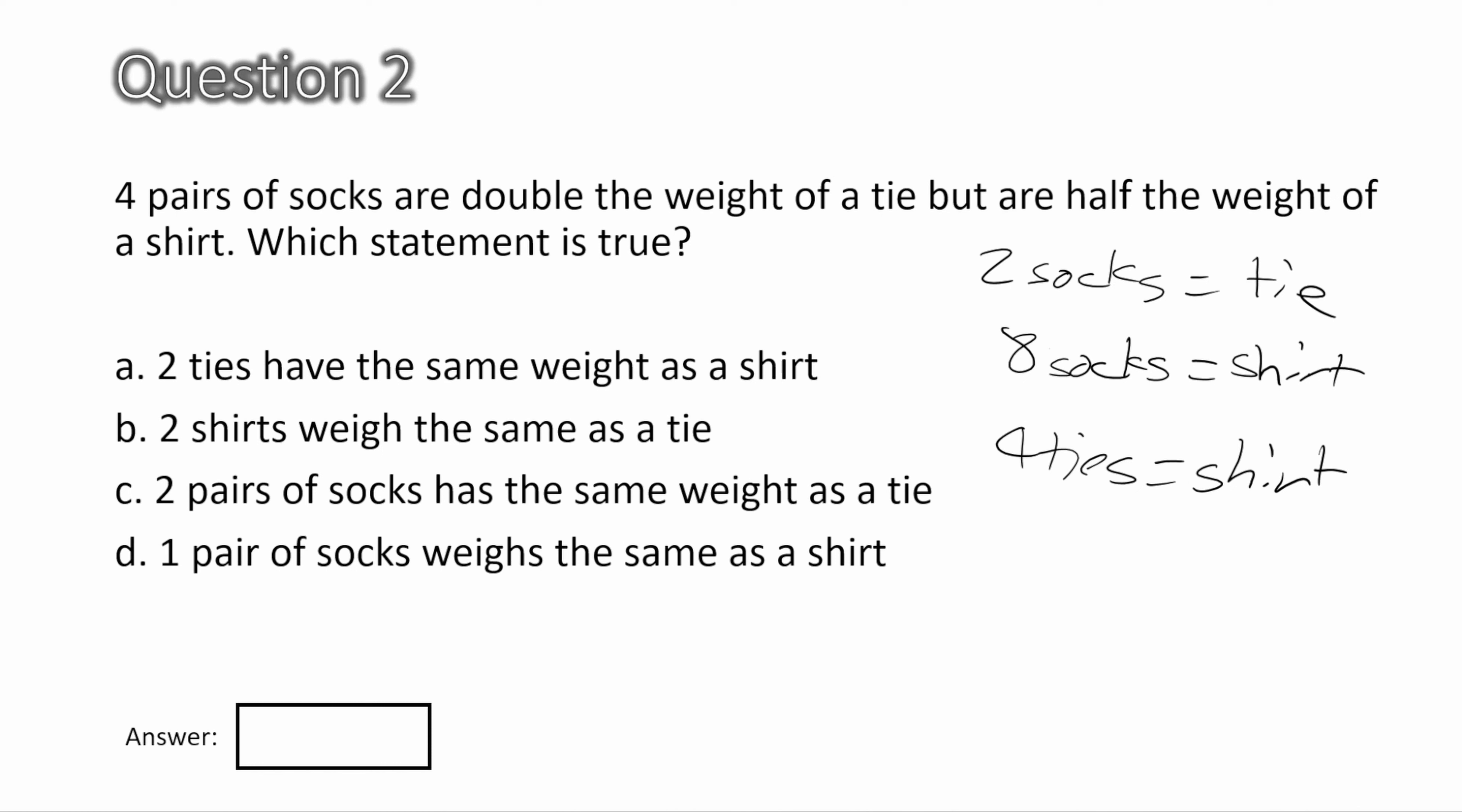Now let's check these options to see which statement is correct. A. Two ties have the same weight as a shirt. From the last statement, it says four ties have the same weight as a shirt. So A is not the answer. B. Two shirts weigh the same as a tie. From that same statement that we've written, it shows us that one shirt weighs the same as four ties. So two shirts would weigh the same as eight ties. So B is definitely not the answer. C. Two pairs of socks has the same weight as a tie. From the first statement, it does say that two socks equals one tie. So C is the correct answer.